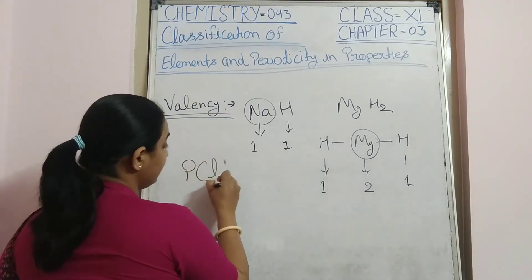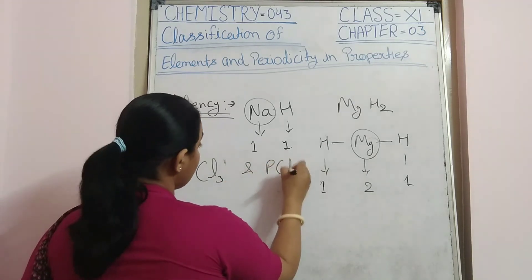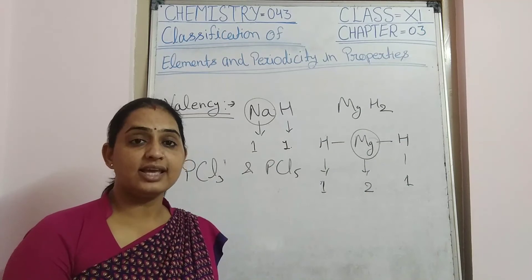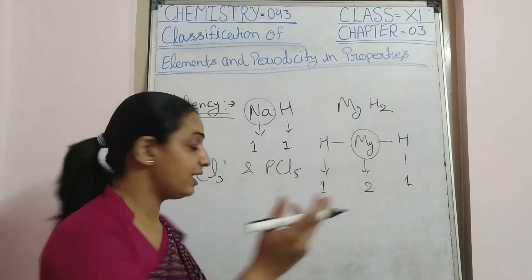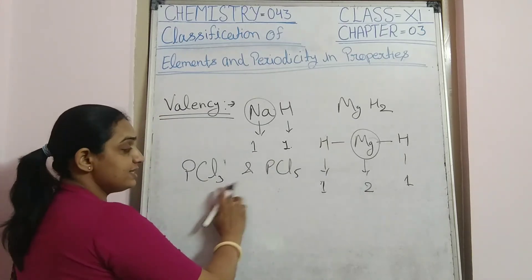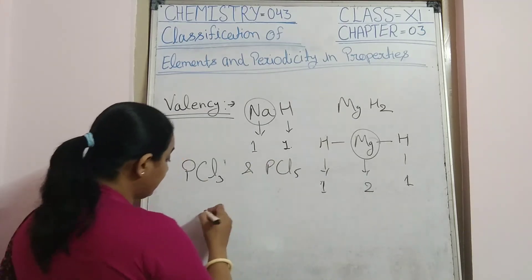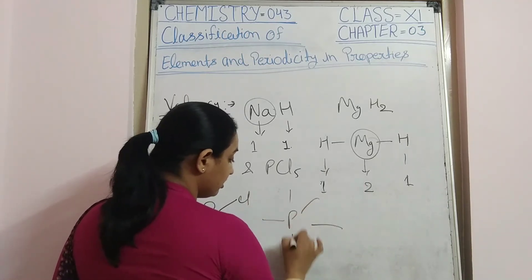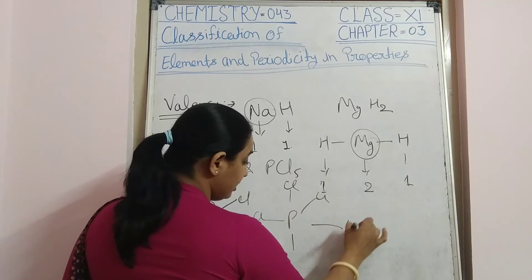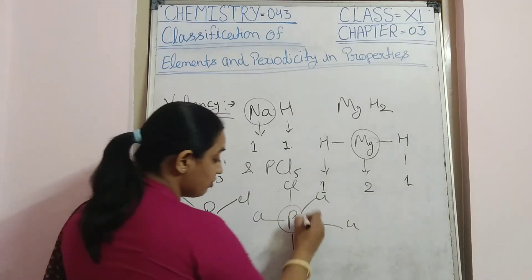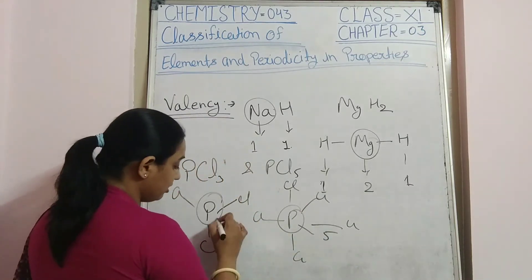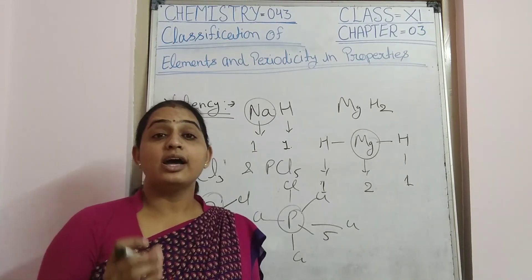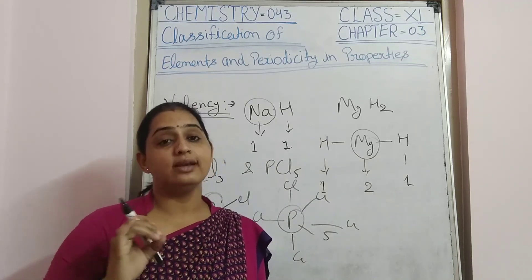For phosphorus: PCl₃ and PCl₅. Chlorine has valency one. In PCl₃, phosphorus combines with 3 Cl atoms, so phosphorus has valency 3. In PCl₅, phosphorus combines with 5 Cl atoms, giving valency 5. Many elements show more than one valency.